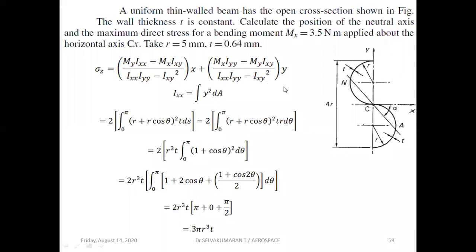The next problem shows a uniform thin-walled beam with an open S-type cross-section and uniform wall thickness. Find the maximum direct stress when subjected to a bending moment Mx = 3.5 N·m, and also find the position of the neutral axis. The numerical value of thickness t is given. The centroid C is already indicated in the figure, and the sigma_z expression is used with Ixx = ∫y²dA.